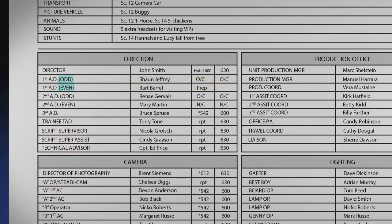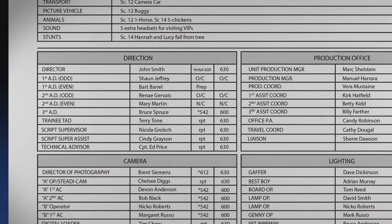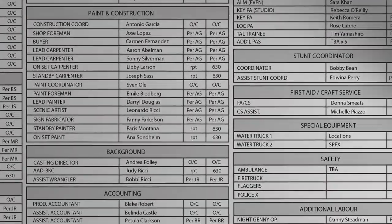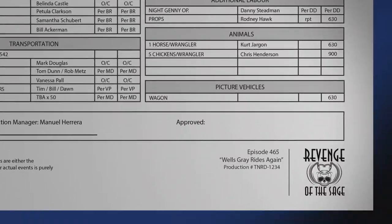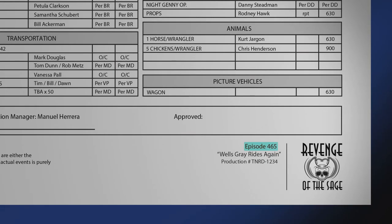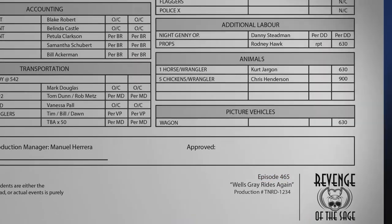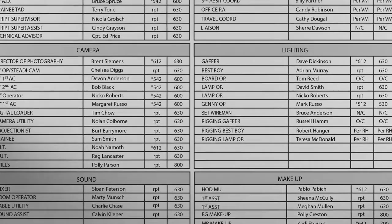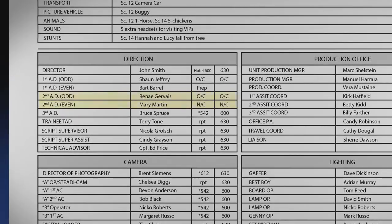Even and odd pertain to script numbers when filming a TV series. For example, one assistant director will prep and run the set for even-numbered scripts, while another assistant director preps and runs the set when productions film odd-numbered scripts.